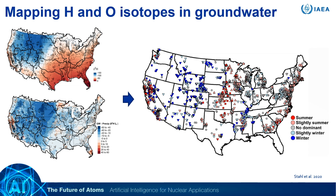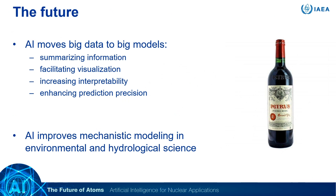Here's a second example of using machine learning and isotope data to answer large-scale hydrological questions. This group mapped hydrogen isotope variation in groundwater across the United States using a random forest framework similar to the strontium example, and compared this map with a map of hydrogen isotope in precipitation monthly. They could then get a map showing the timing of recharge of this groundwater across space — if the groundwater isotope value looks more like a particular month of precipitation, the recharge was likely coming from that month. You can see, for example, that the Rocky Mountains get most of their recharge during winter, while the Midwest gets most of its recharge during summer. This sort of map is extremely useful for figuring out water vulnerability, water sustainability, and how to manage groundwater resources over the long term.